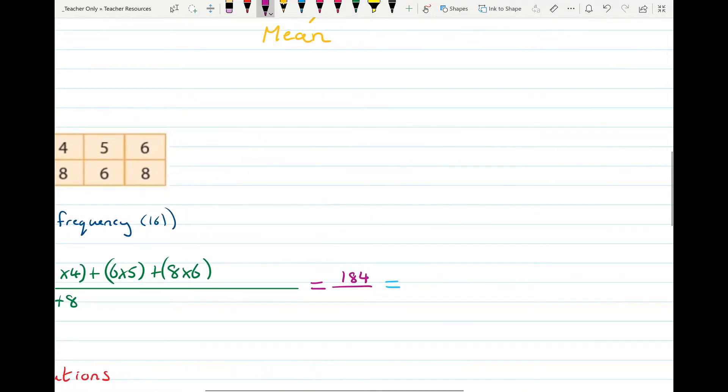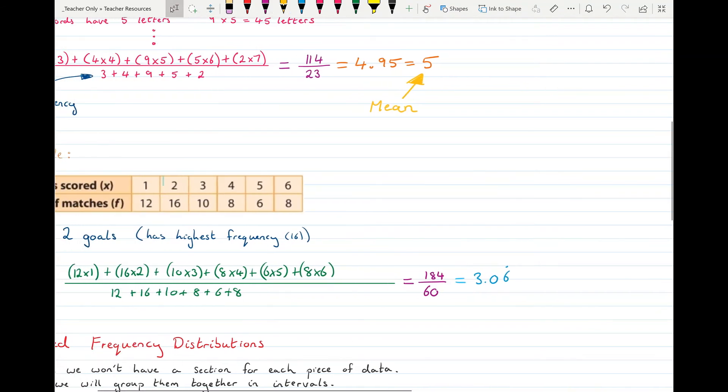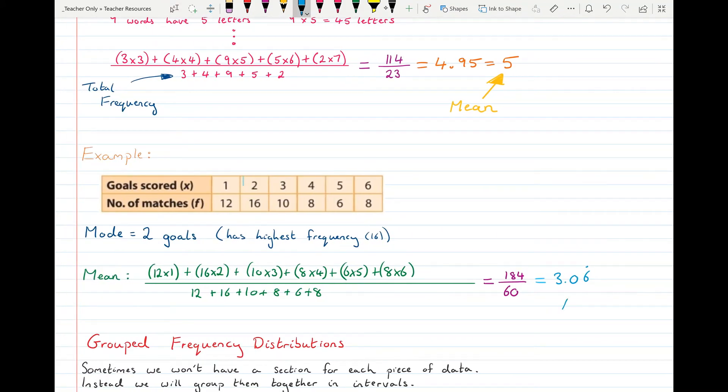There were 60 matches and 184 divided by 60 is 3.06 repeating goals. So the mean number of goals scored in these matches was 3.06. So that's pretty good for a game.